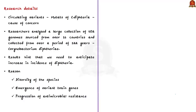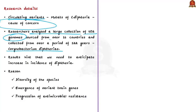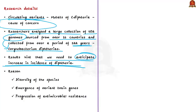Of concern is the circulating variants of diphtheria. Like viruses, diphtheria is no exception to mutation-driven variation. Researchers from India, UK, and Russia analyzed around 502 genomes sourced from more than 16 countries over a period of 122 years. The results hint that we need to anticipate an increase in incidence of diphtheria both currently and in the future.